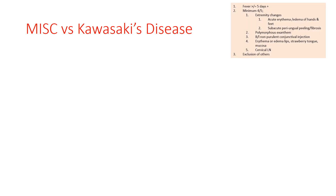Kawasaki's disease is defined by fever of more than or equal to 5 days along with a minimum of 4 of the following 5 criteria: extremity changes — erythema or edema of hands and feet in the acute stage, progressing to periungual peeling in the sub-acute stage; polymorphous exanthem; bilateral non-purulent conjunctival injection; erythema or edema of lips with strawberry tongue and mucosa; and cervical lymphadenopathy, along with exclusion of other causes.